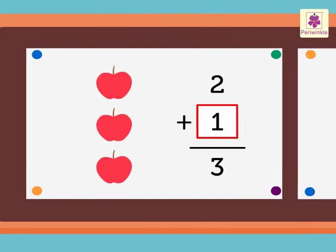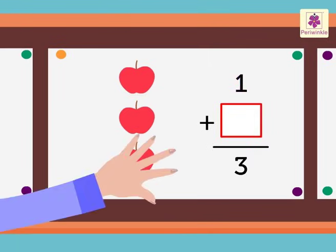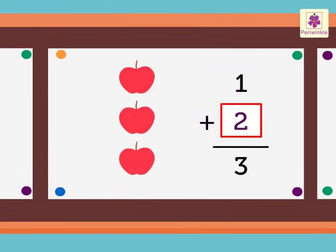Let us look at another addition which also gives the sum of three. Here, the given addend is one. So, we hide one apple. We can see two apples. Thus, the missing addend is two. One plus two is equal to three.